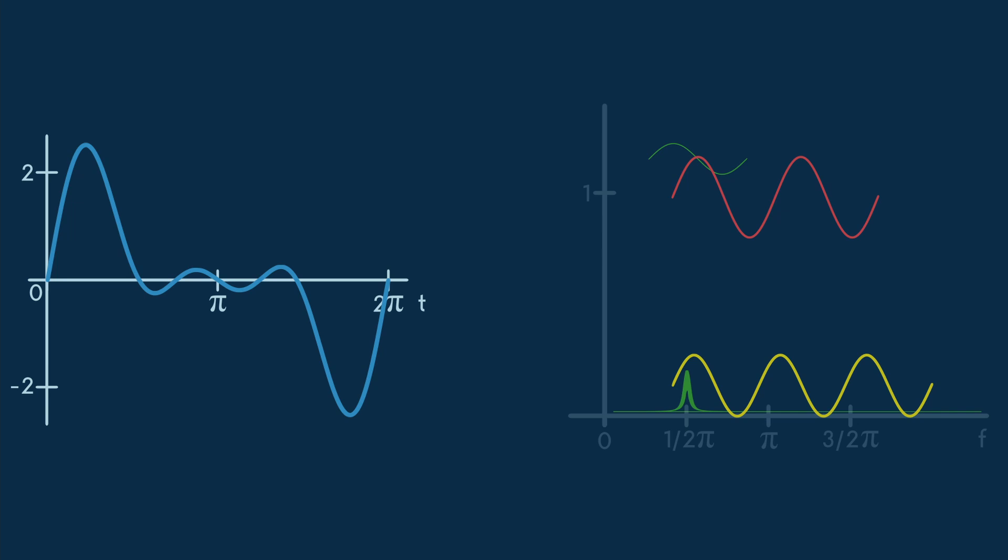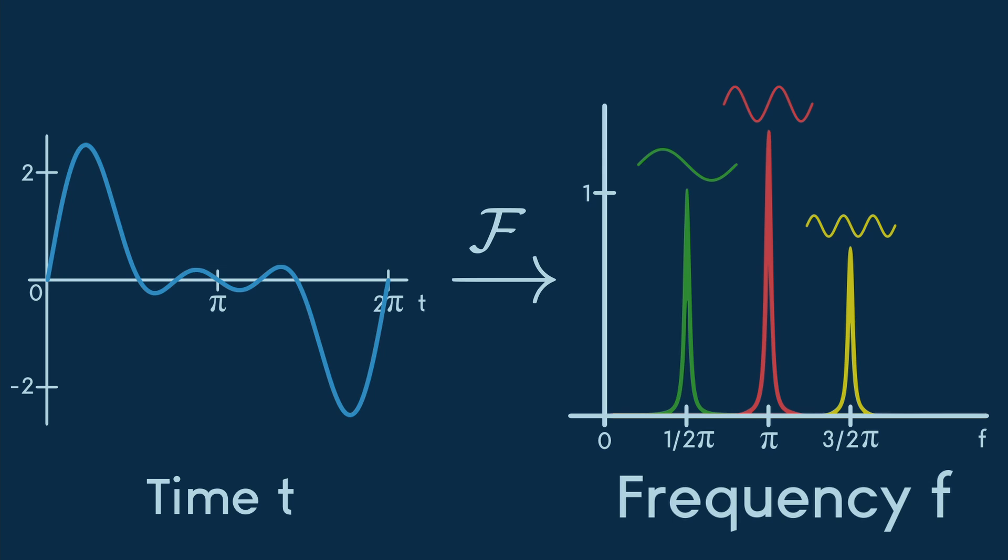In the frequency domain, we can easily identify the frequencies of the sinuses, while in the time domain, the signal is a lot messier.